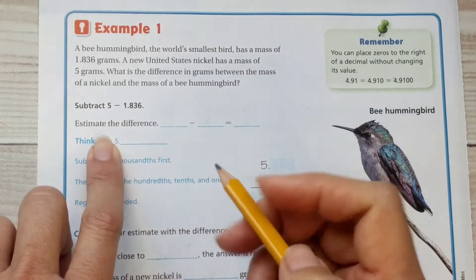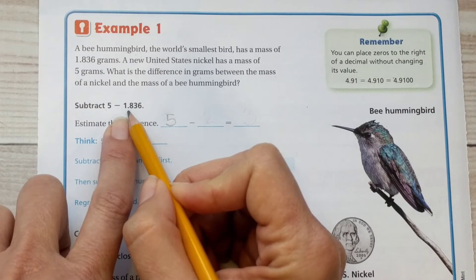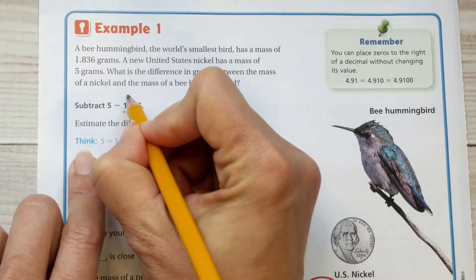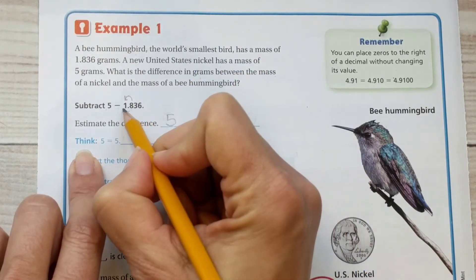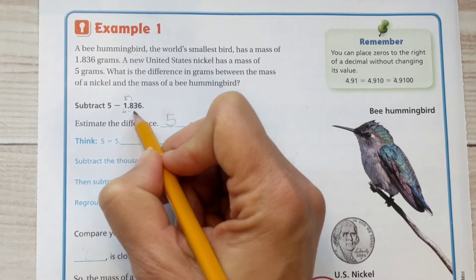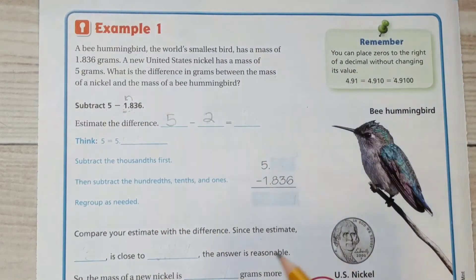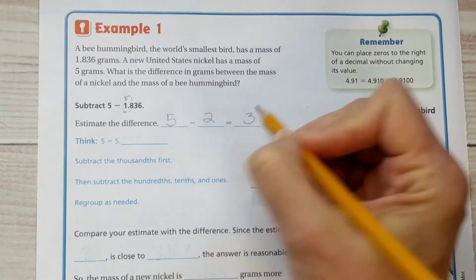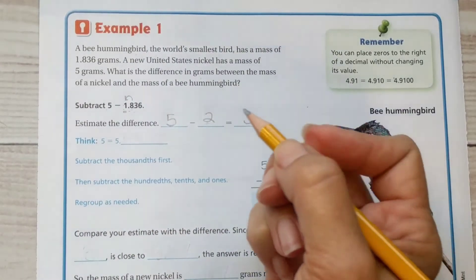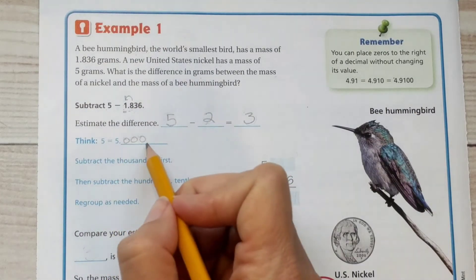5 is already a whole number. I don't have to do anything to that one. So I'm just going to write 5 there. This, we're going to round it to the nearest whole number. Remember, the number in front of the decimal is the whole number. So we're going to look at this 8. Does the 8 affect that 1 when rounding? Well, remember, if it's 5 or more, then we go ahead and round up. So 8 is greater than 5. Therefore, we will round this up to 2. So 5 take away 2 is 3. They said, think, they're giving us a little hint. So 5 is the same as 5.000.